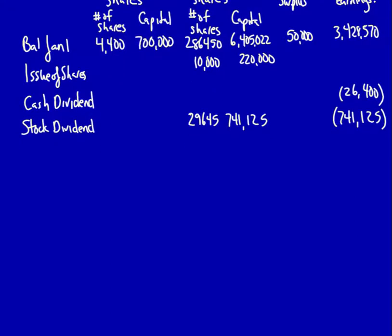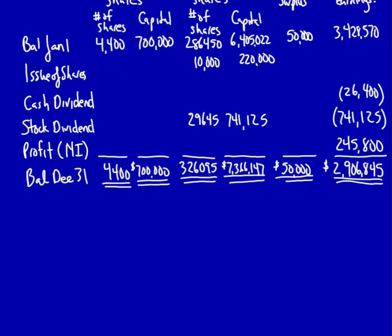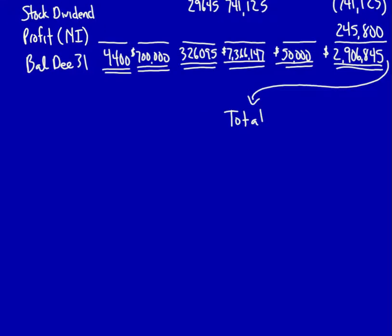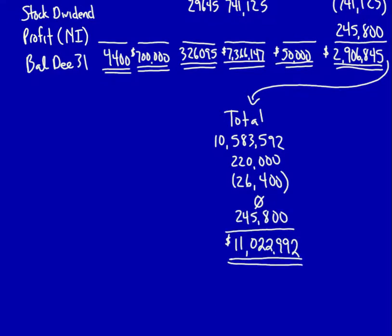Finally we had profit, also called net income, which impacts retained earnings by increasing it. At the end is the balance at the end of the year. Note that there would be a total column. The stock dividend shows as zero in the total column because a stock dividend causes retained earnings to go down and common shares to go up by the exact same amount — the net of those two amounts is zero. Notice that the total works both across the rows and down the columns. If the addition doesn't work in both directions, you've done something wrong. That is the statement of changes in shareholders' equity.